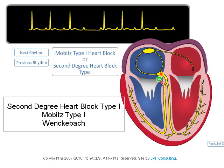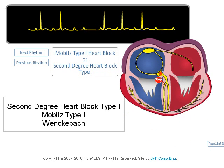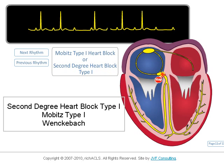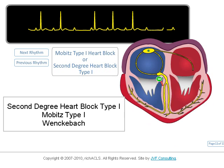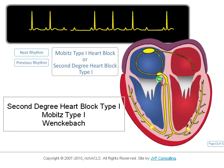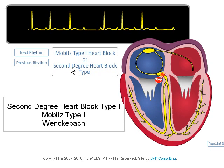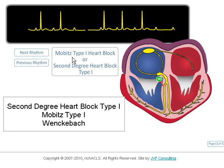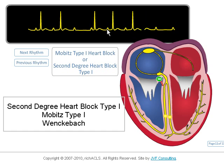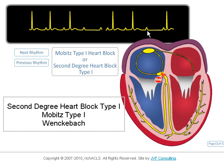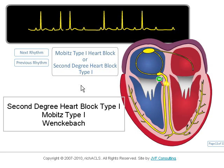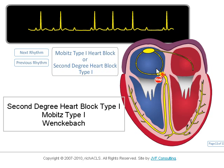Here is the second-degree heart block type I, also called Mobitz type I or Wenckebach. The unique characteristic of this normally benign block is a progressive lengthening of the PR interval until an atrial impulse is not conducted through the AV node. The problem is with the tissue in the AV node and is usually transient.